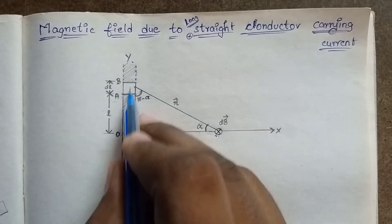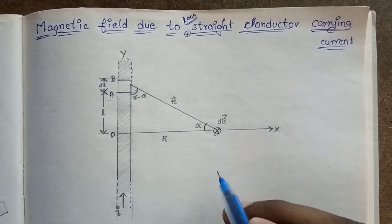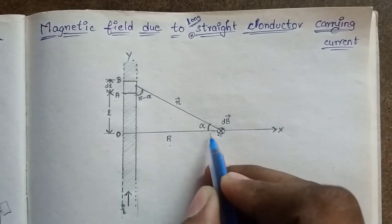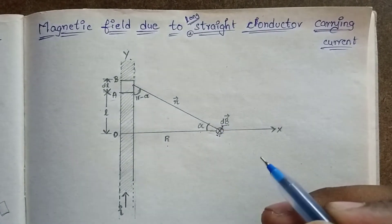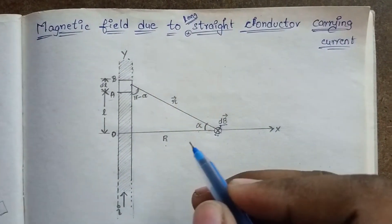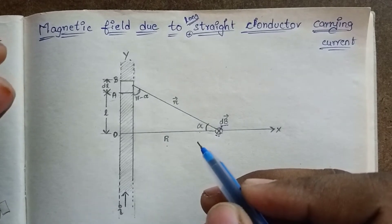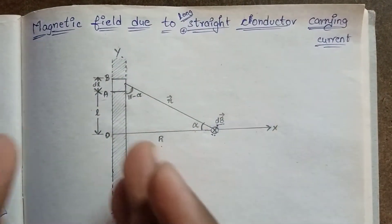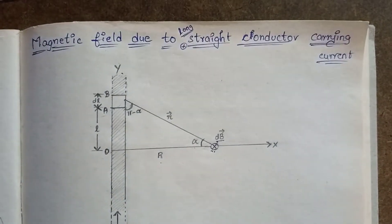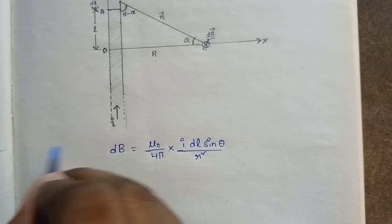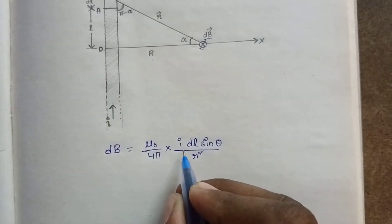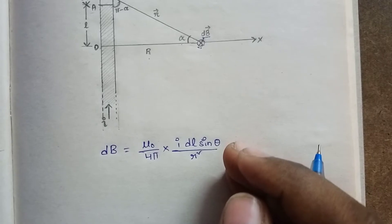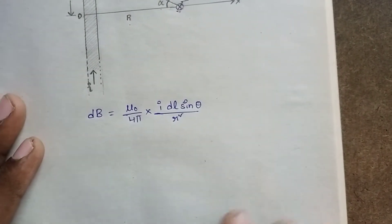This element is the current element producing a magnetic field. From Biot-Savart Law: dB is equal to μ₀ by 4π into i·dl·sinθ by r². This is a standard formula. So if we have a problem in PG set, we apply this formula.